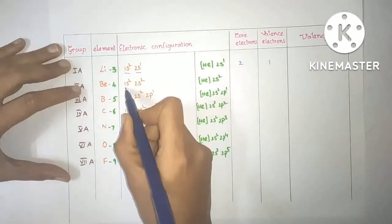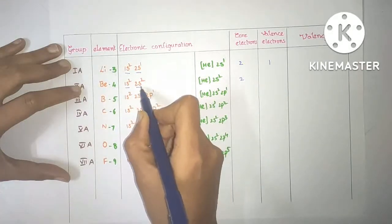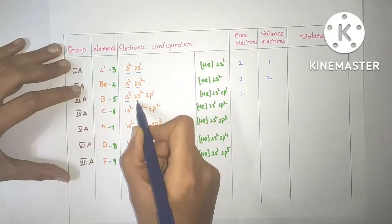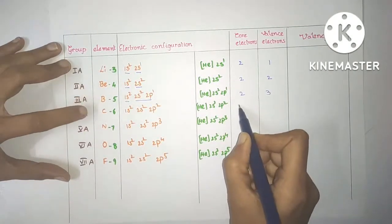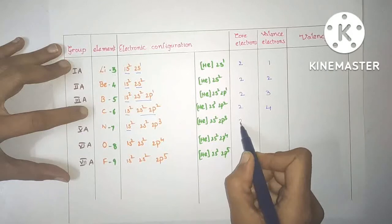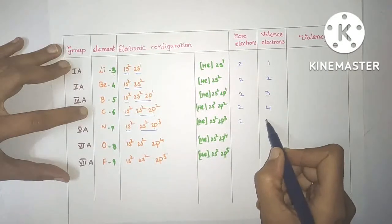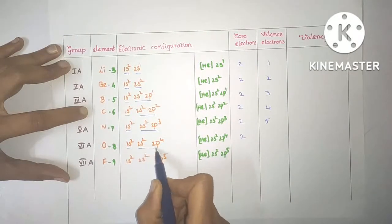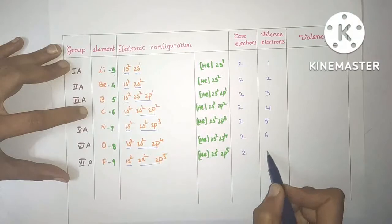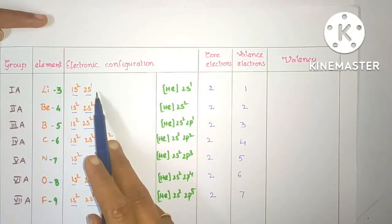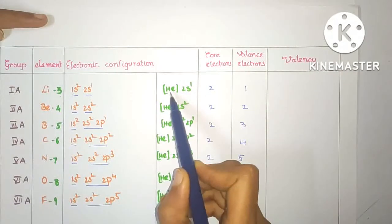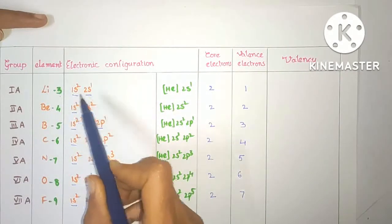For beryllium, the number of core electrons is 2 and number of valence electrons is 2. For boron, 2 core electrons and the second shell is the outermost shell, so the number of valence electrons is 3. Carbon has 2 core electrons and 4 valence electrons. Nitrogen has 2 core electrons and 5 valence electrons. Oxygen has 2 core electrons and 6 valence electrons. Fluorine has 2 core electrons and 7 valence electrons. We can also write the electronic configuration using the helium symbol in brackets for 1s², followed by the remaining configuration.